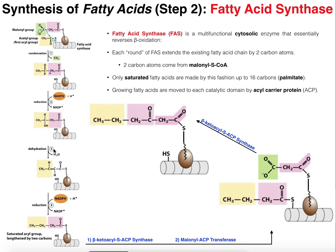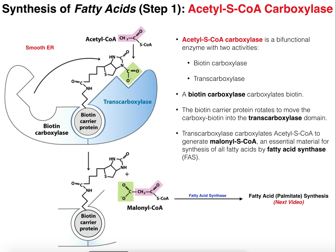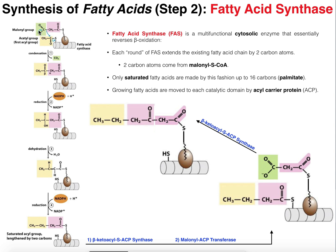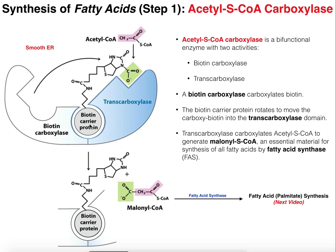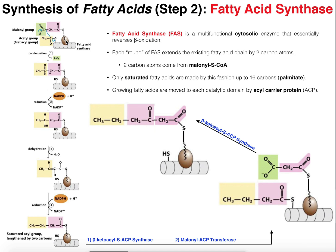Before we go into the four major steps of fatty acid synthase — the reverse of beta-oxidation — we need to talk about two things. First, we need to utilize the malonyl group from the malonyl-CoA generated by acetyl-CoA carboxylase. This three-carbon fragment of malonyl-CoA is going to be attached to the thiol, the sulfur, of this brown protein referred to as acyl carrier protein. Acyl carrier protein functions like an arm that swings the substrate between the various subunits and functionalities of fatty acid synthase, carrying the growing fatty acid chain.